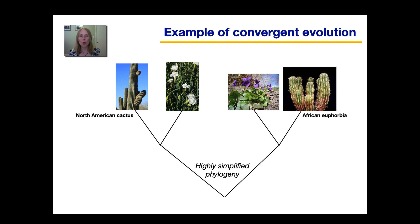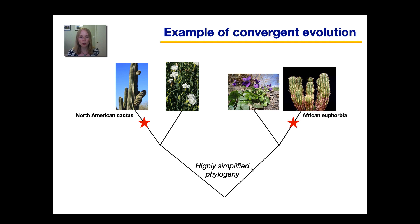Now, how did this happen? Well, both of these groups of plants evolved in very hot and dry areas. So natural selection selected for individuals that had adaptations that allowed them to survive the dry conditions. These asterisks mark convergent evolution — the independent evolution of traits that were very similar, such as thick stems and very small leaves. The way we know that these characteristics are homoplasies and not homologies is that if we trace back in time to the most recent common ancestor between euphorbia and cactuses, this common ancestor did not have those adaptations — did not have thick stems and small leaves. So there was independent evolution due to similar environmental pressures.